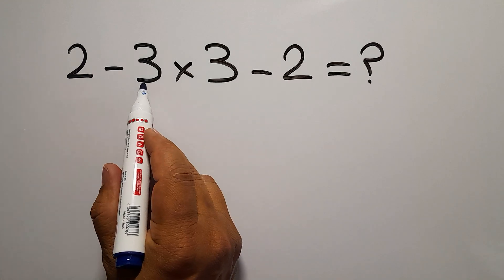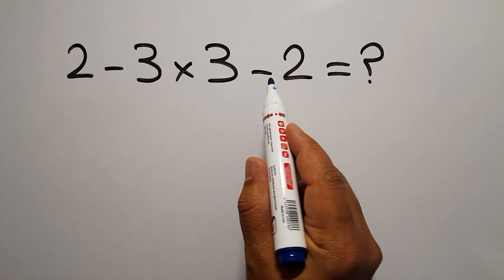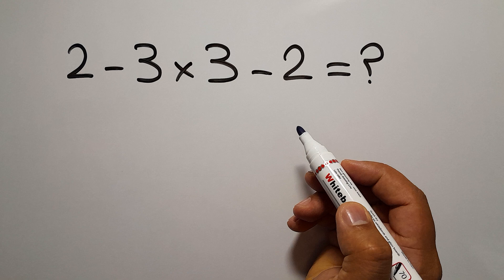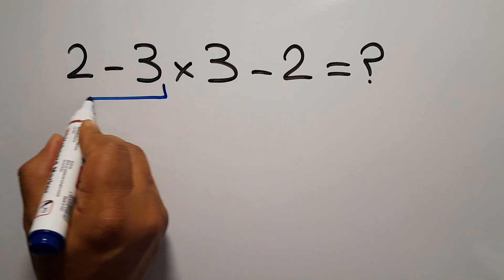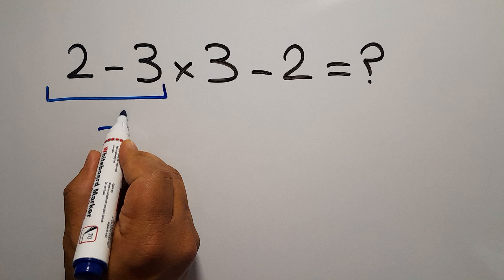2 minus 3 times 3 minus 2. 2 minus 3 gives us negative 1.